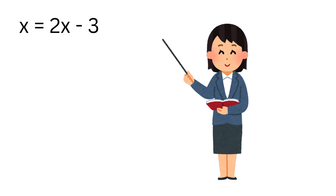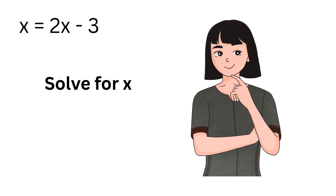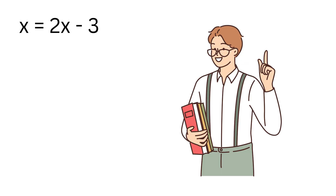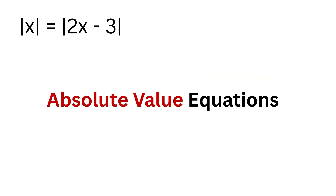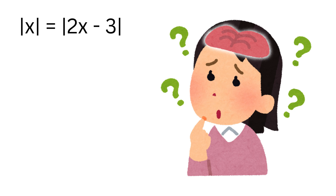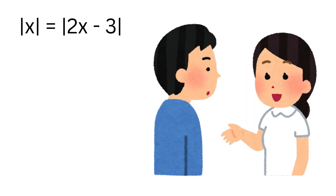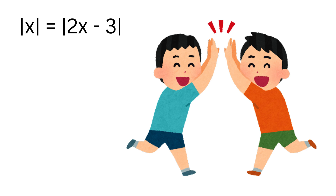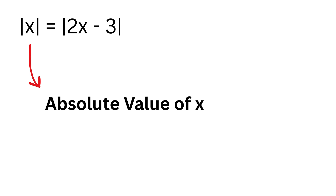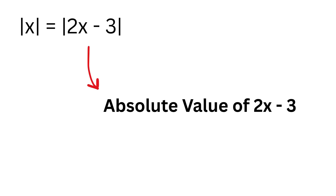You might have seen this type of equation where there are no vertical bars and we need to solve for x — they are super easy to solve. But today, instead of those simple ones, we have an equation with vertical bars, which are called absolute value equations. These absolute values make the problem look tricky, but if we move step by step it actually becomes very logical and even fun. Our equation is the absolute value of x equals the absolute value of two times x minus three.